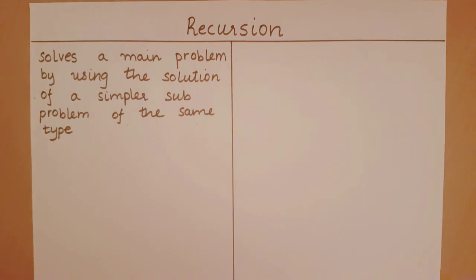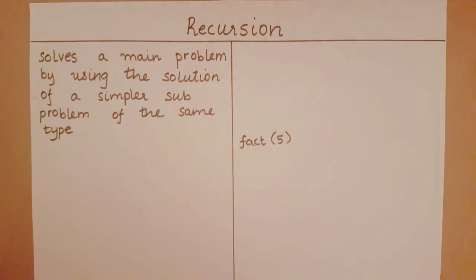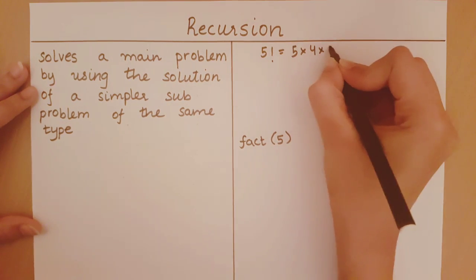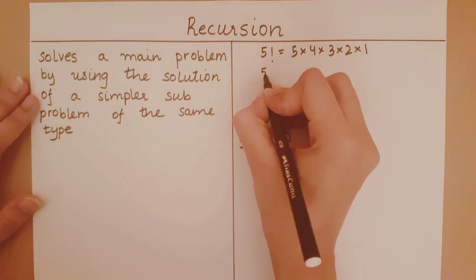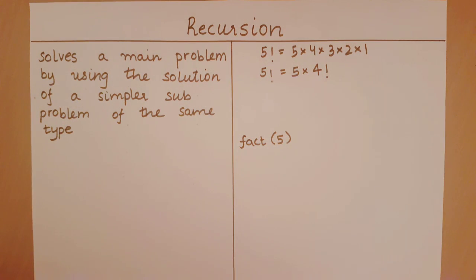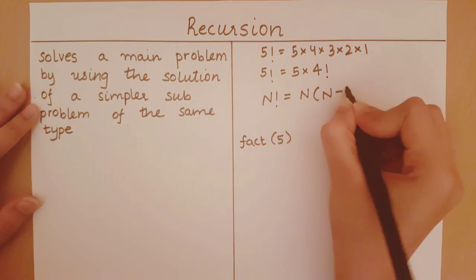Let me explain this with a quick example. Let us say I want to calculate 5 factorial, so I am going to call the function factorial of 5. Now you and I know that 5 factorial is nothing but 5 into 4 into 3 into 2 into 1. This could also be written as 5 into 4 factorial. For any n, n factorial will be n into (n-1) factorial.